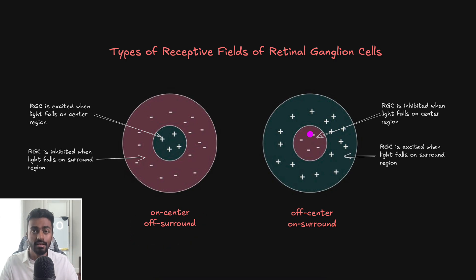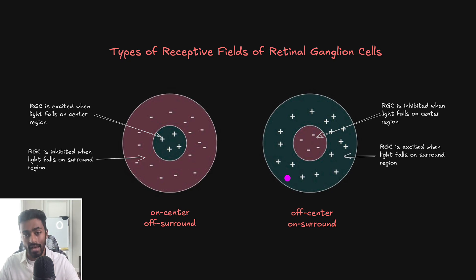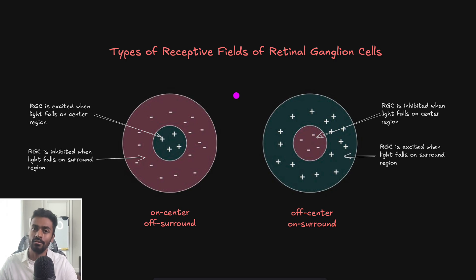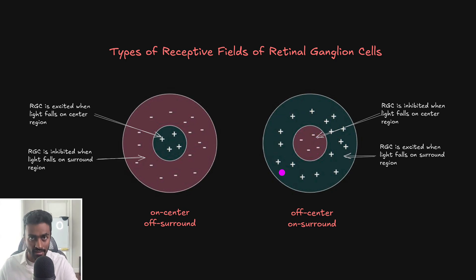Conversely, a retinal ganglion cell could have another type of receptive field where if light falls on the photoreceptors in the center region, they inhibit the retinal ganglion cell, and if light falls on the surround region, they excite the retinal ganglion cell. This is an off-center, on-surround receptive field. This two-case setup is mostly due to the functioning of the horizontal cell, which ensures that the effect of the center and surround is opposite to each other. You can look up more on the concept of lateral inhibition.